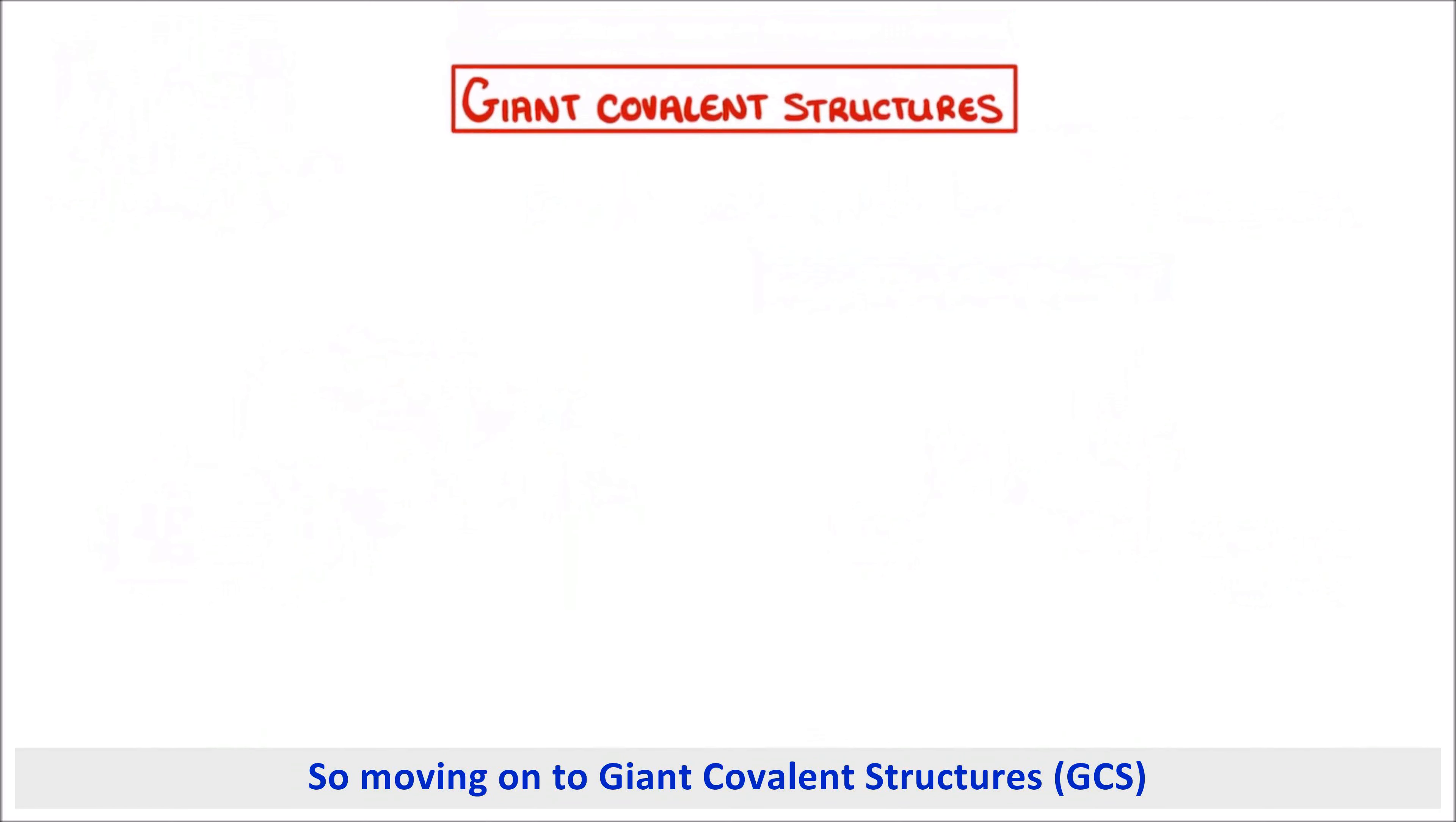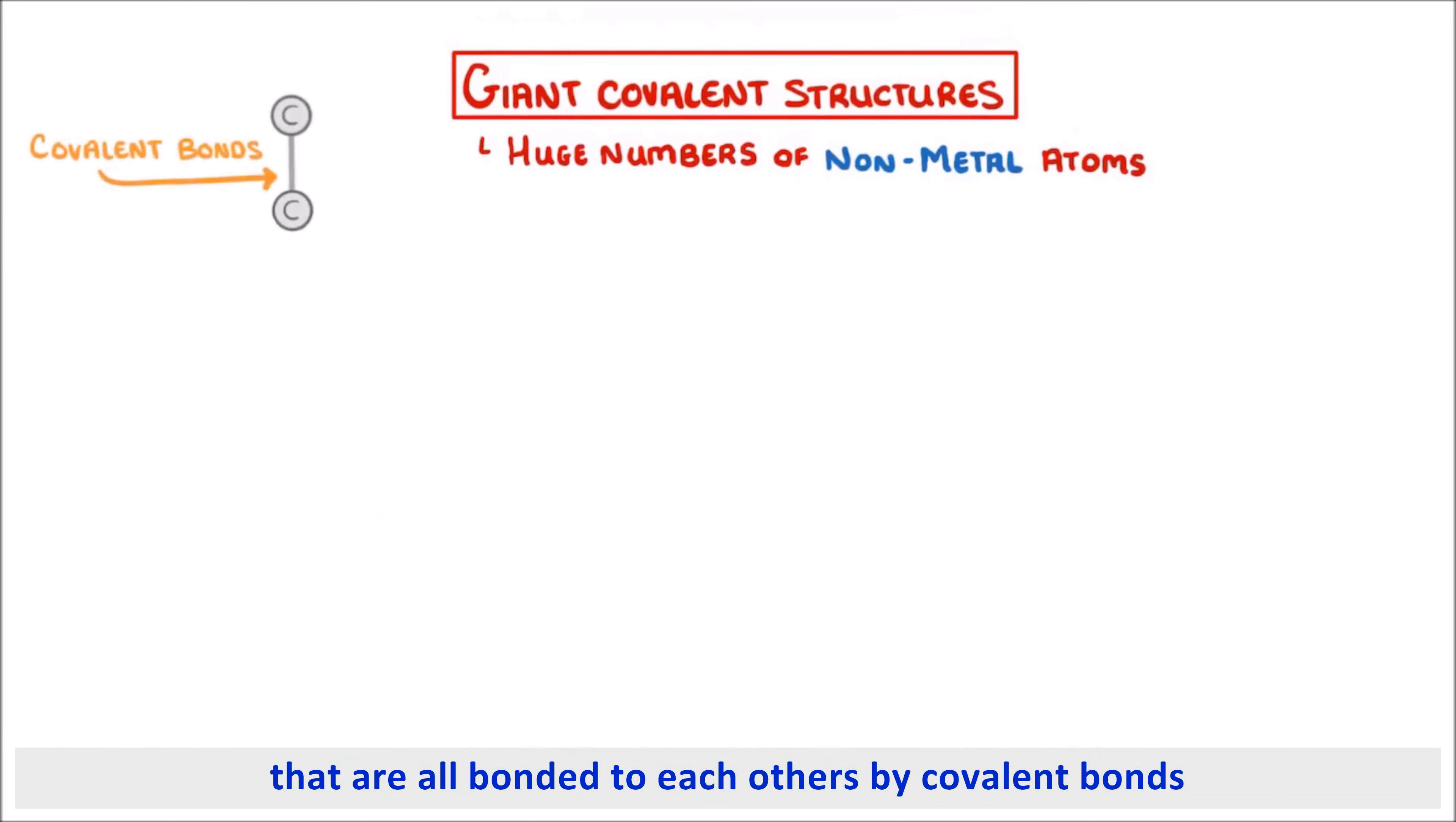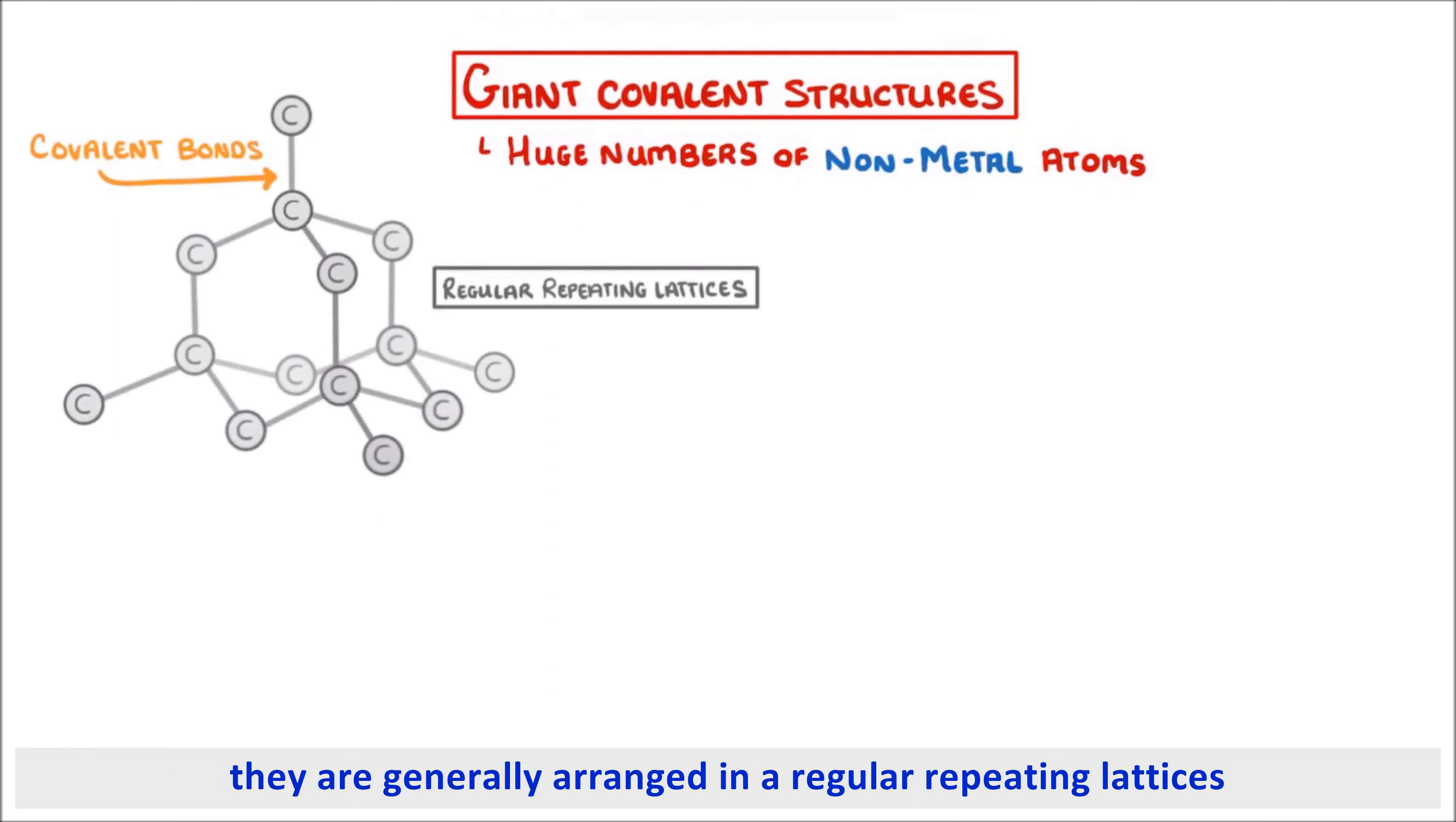So moving on to giant covalent structures, these are made of huge numbers of nonmetal atoms that are all bonded to each other by covalent bonds. And they're generally arranged into regular repeating lattices, which just means that their structure kind of repeats over and over.